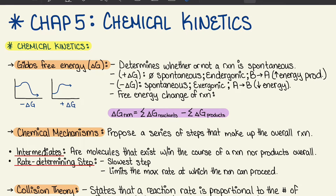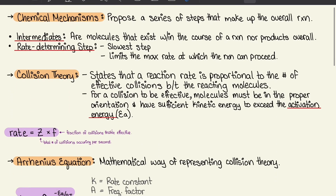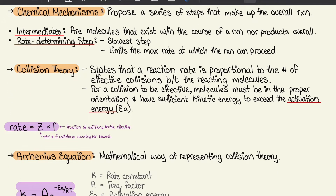Moving on to chemical mechanisms — it proposes a series of steps that make up the overall reaction. Intermediates are molecules that exist within the course of a reaction but are neither reactants nor products overall. The rate determining step is the slowest step and limits the maximum rate at which the reaction can proceed. Intermediates are cancelled out when you add up the steps, so they don't appear in the final overall reaction.